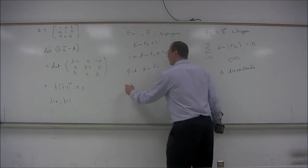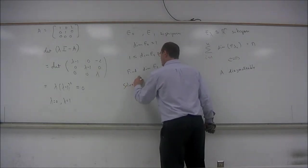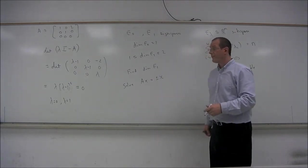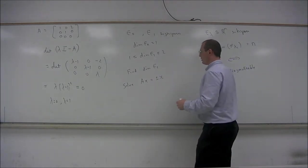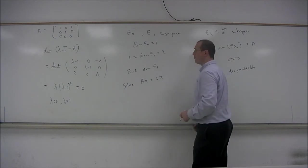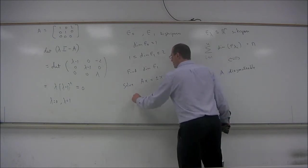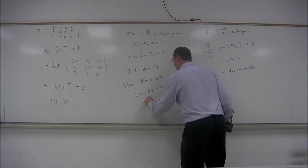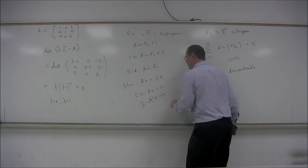So let's find the dimension of the eigenspace E1. So in other words, we're looking for solutions to the system AX equals 1 times X. AX equals X. So we can turn this into a homogeneous system. In fact,